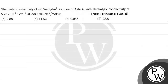Hello Bacho, let's read this question. The question says: the molar conductivity of 0.5 mole per decimeter cube solution of silver nitrate with electrolytic conductivity of 5.76 × 10⁻³ siemens per centimeter at 298 Kelvin in siemens centimeter square mole inverse is — option A: 2.88, option B: 11.52, option C: 0.086, option D: 28.8.